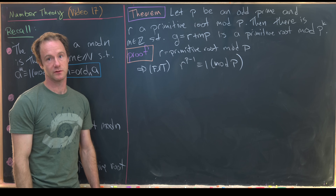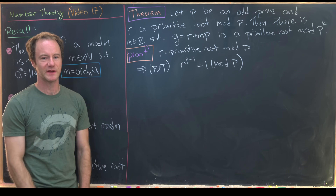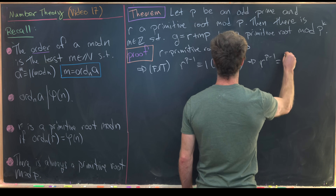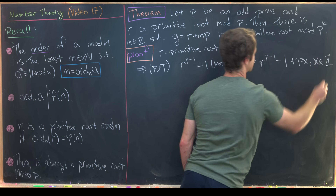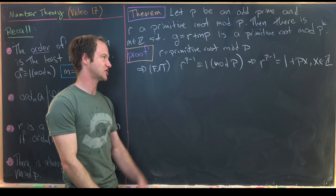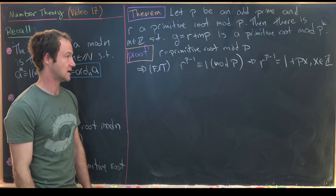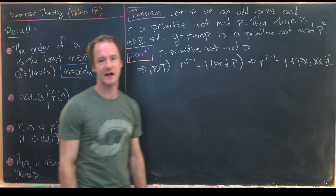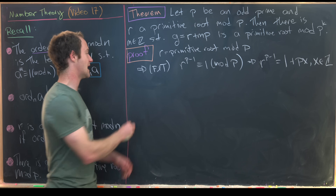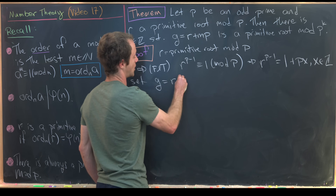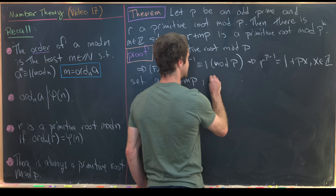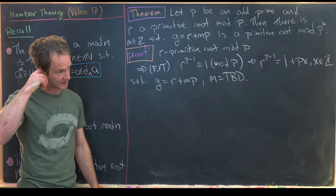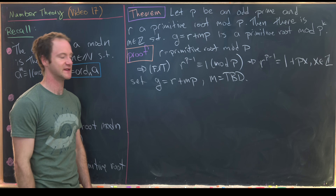We want to turn that congruence into an equation because it's easier to work with. So r to the p minus 1 equals 1 plus px, where x is some integer — that's essentially just the definition of congruence mod p. Now let's set g equal to r plus mp, where m is to be determined. We don't know what m is yet, but after we see what sort of relationships it must satisfy, we can get an idea of what m is.